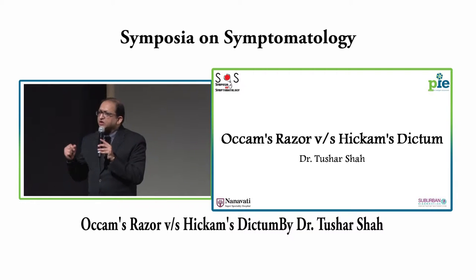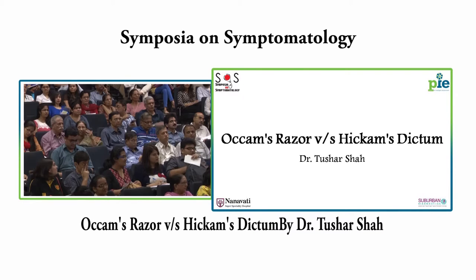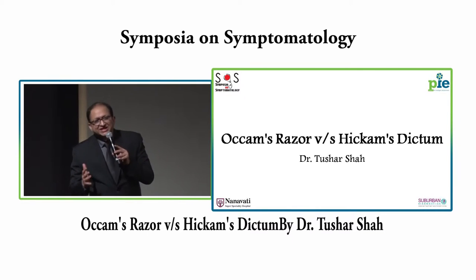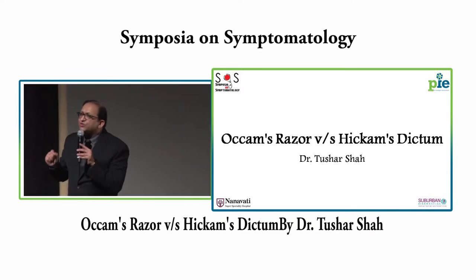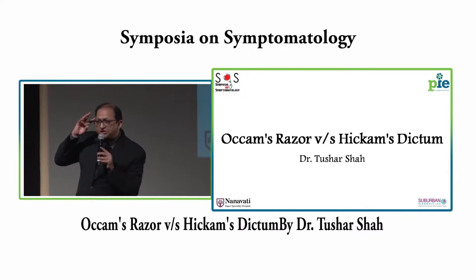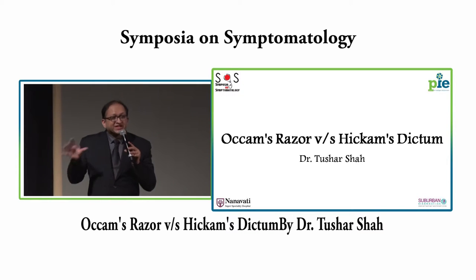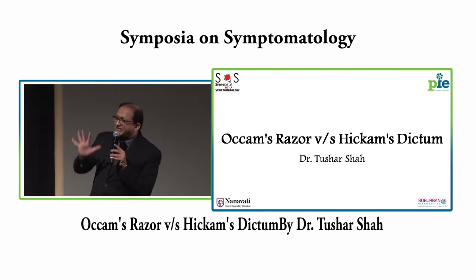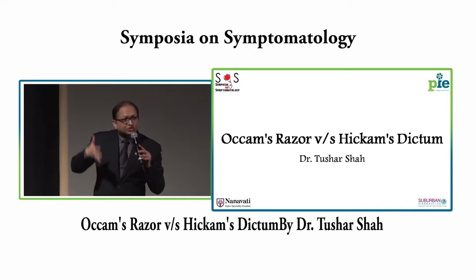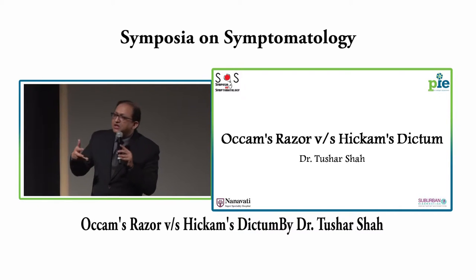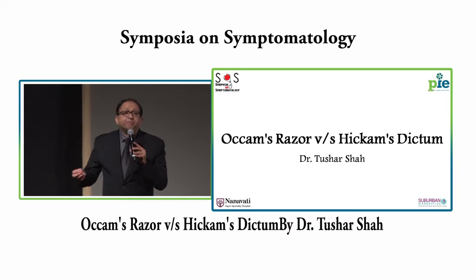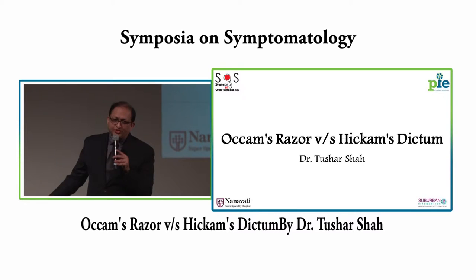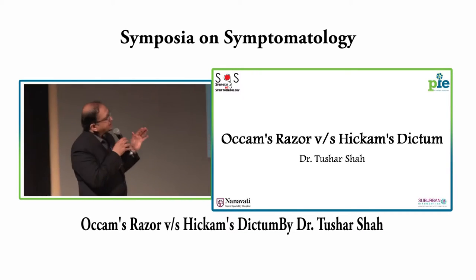Occam's Razor is a heuristic — H-E-U-R-I-S-T-I-C. A heuristic is a shortcut, a mental shortcut to make things easier if not perfect. When Dr. Ambedekar gave you those five things in a patient of fever, those five things comprised a mental shortcut which may not give you the perfect answer but will lead you somewhere close to it. That is a heuristic. So Occam's Razor is a heuristic.